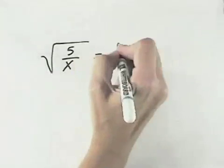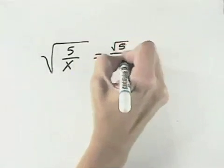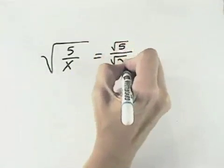So looking at this equation, the first thing we're going to have to do is to split up the radical so we can see what the denominator is. We know that we can split a radical between the numerator and the denominator to write this as the square root of 5 over the square root of x.